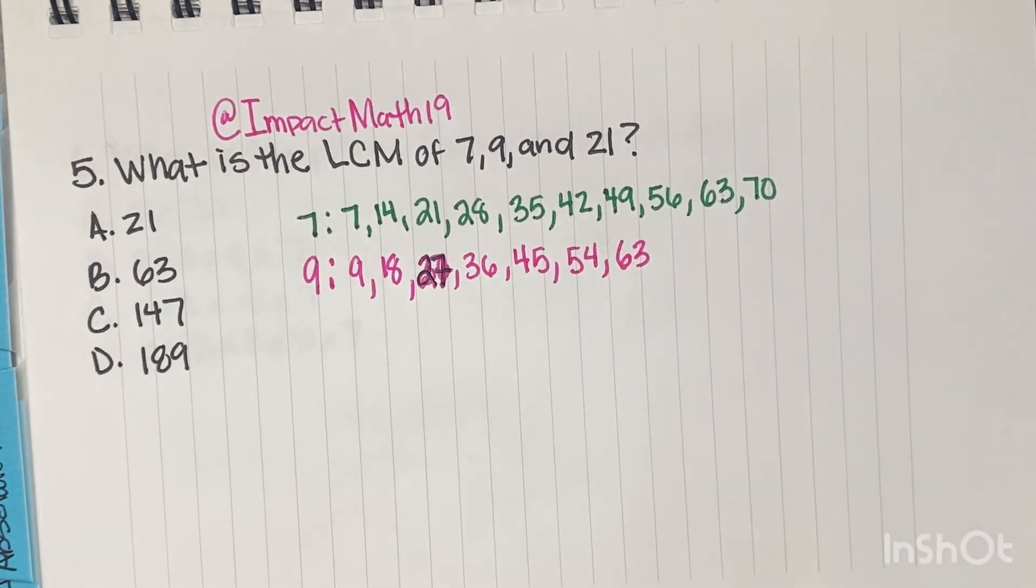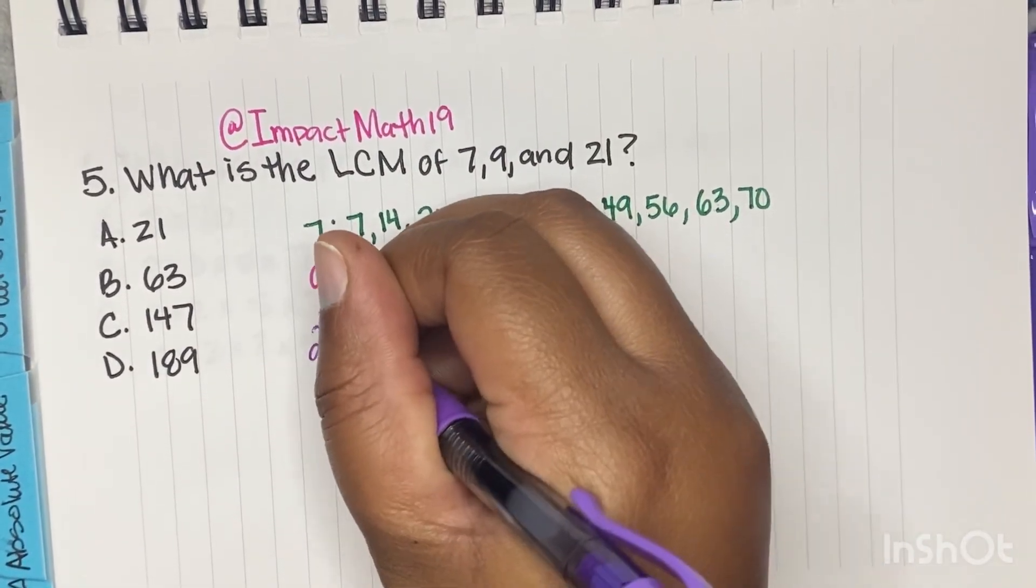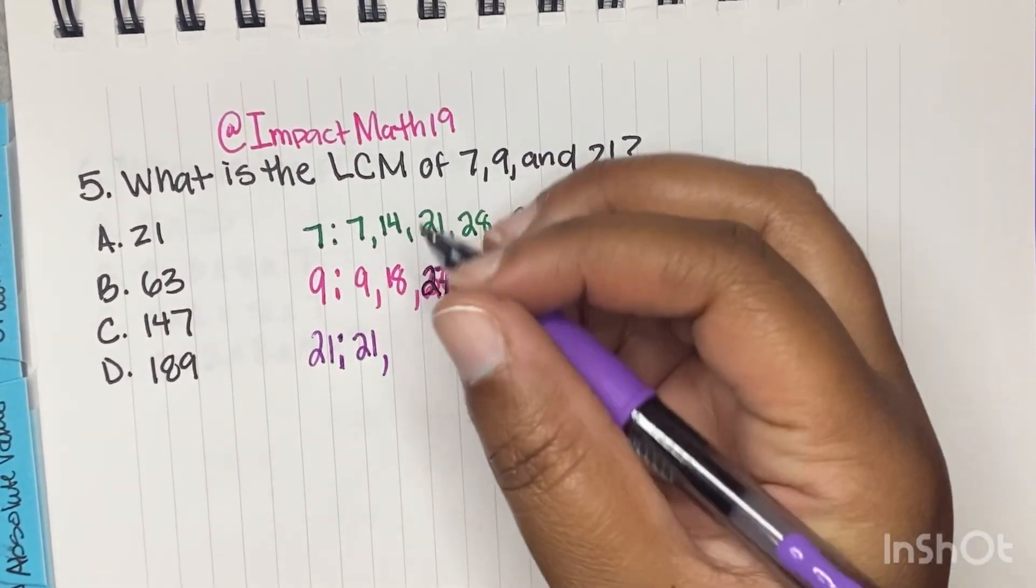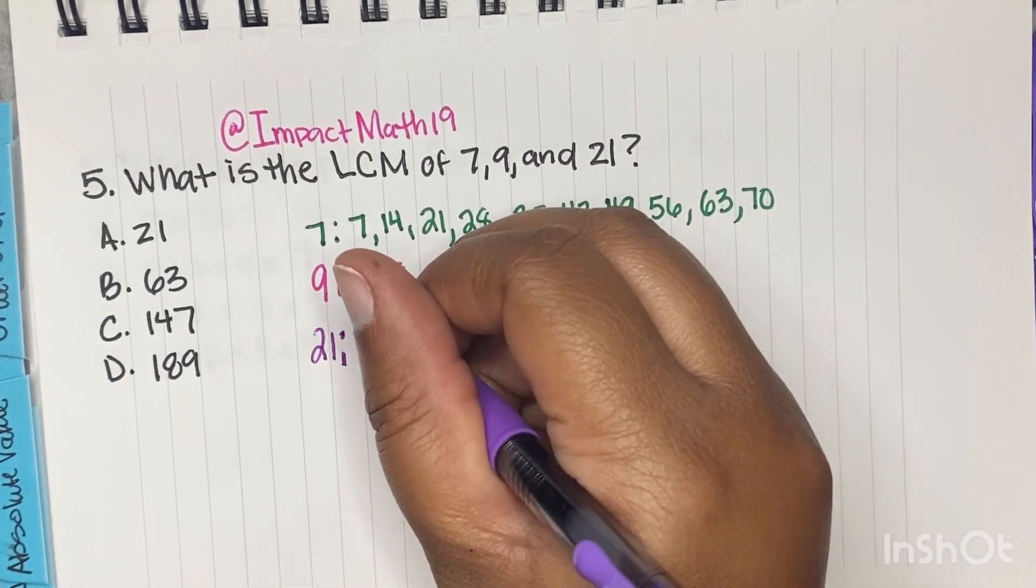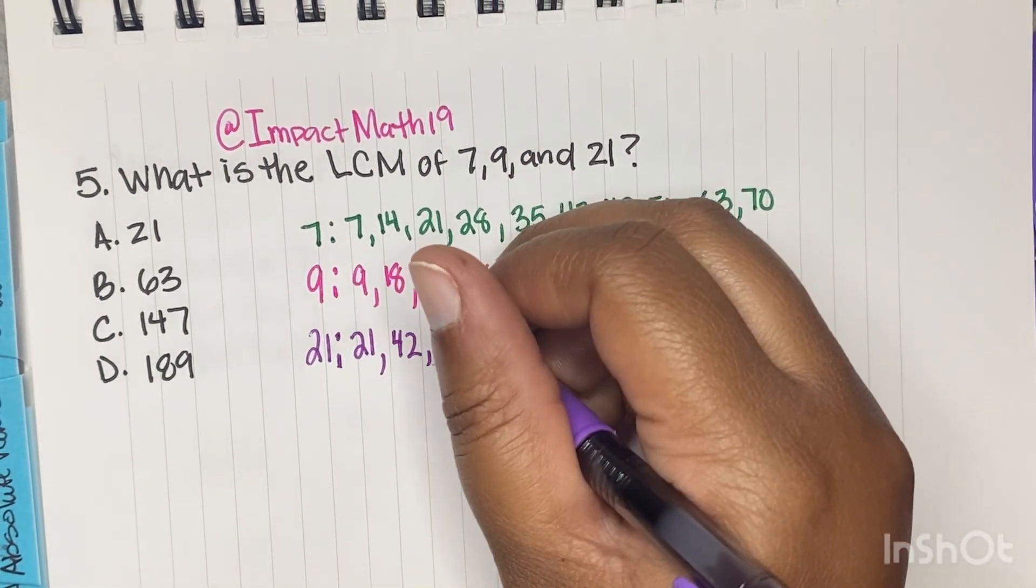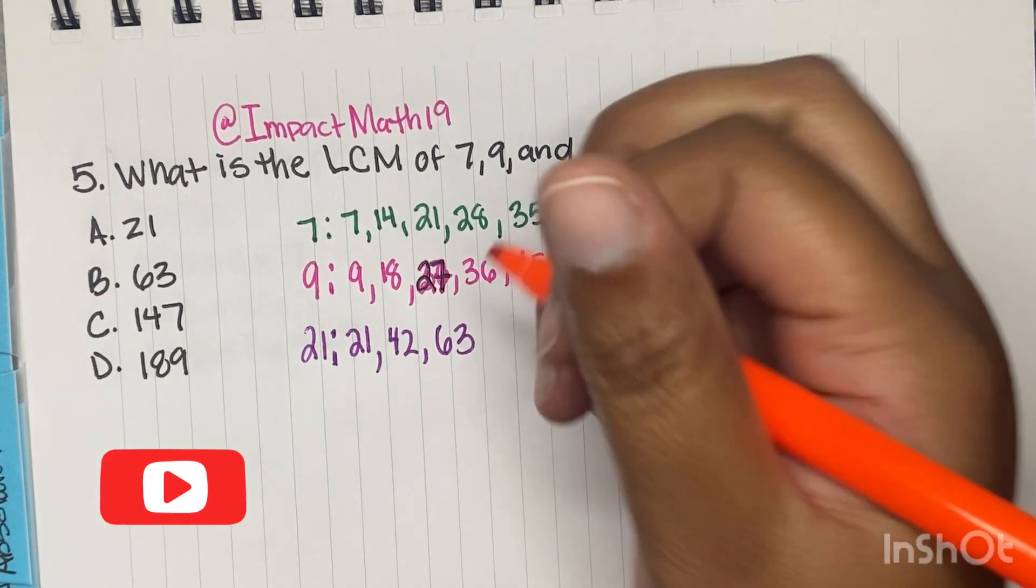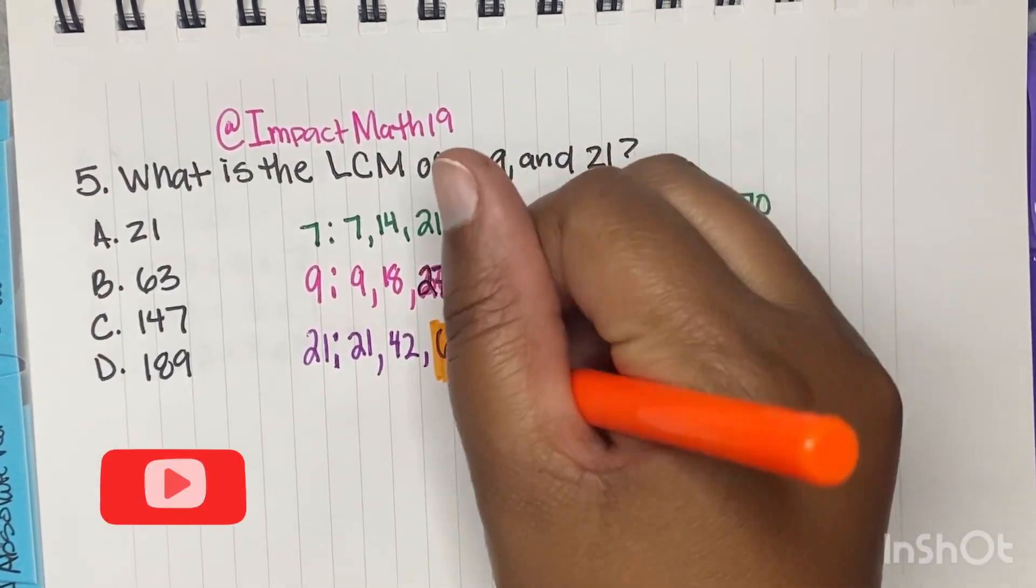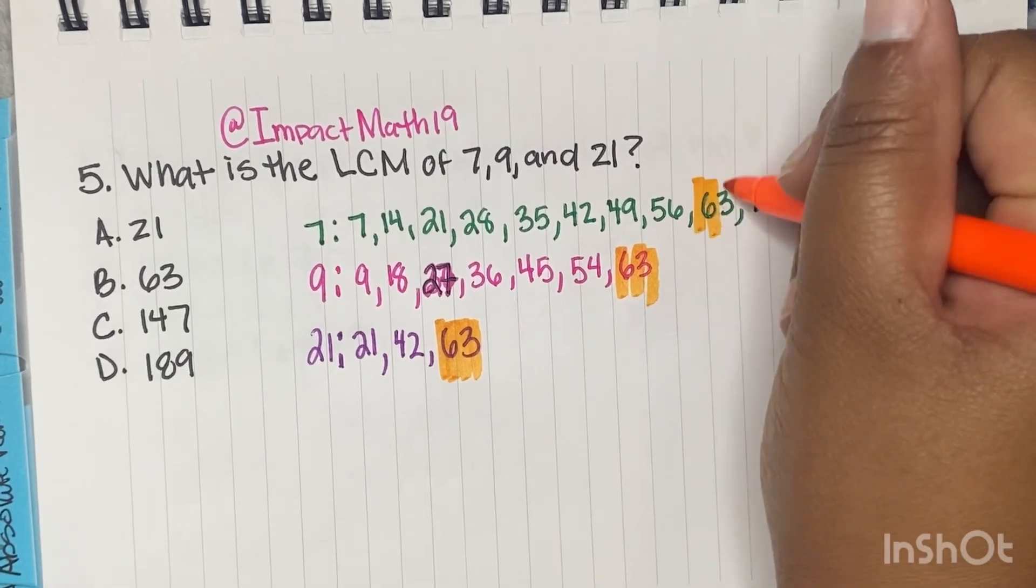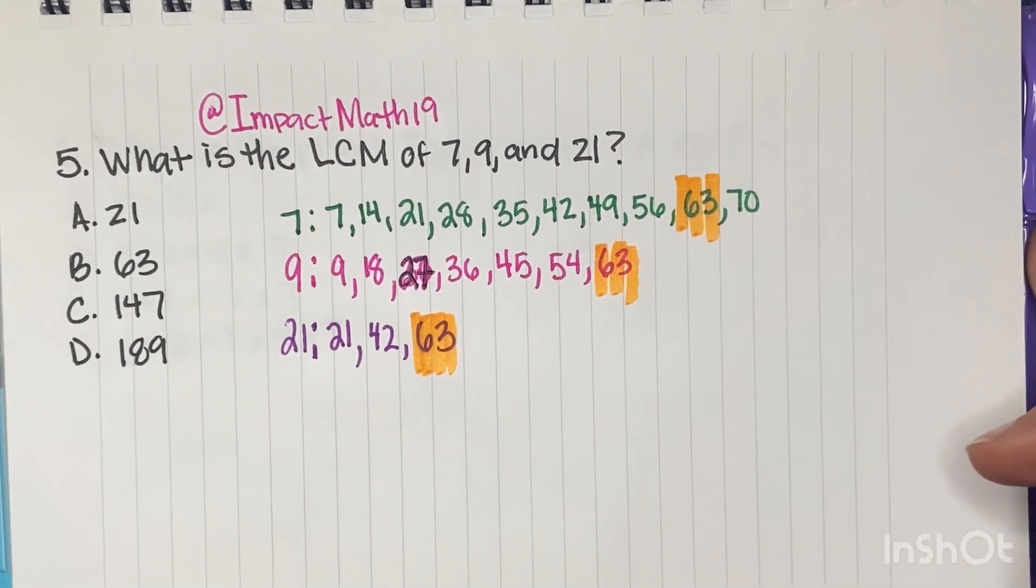All right. Let's stop there. I'm liking what I'm seeing here. Now let's see what 21 is going to do for us. So 21, our first multiple is 21. Our second, 21 doubled is going to give us 42. Our third multiple is going to give us 63. And so what we can see is what they all have in common. The least common multiple, the first one that they all have in common is 63. So B is our answer.